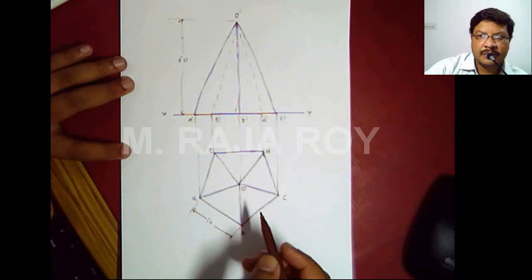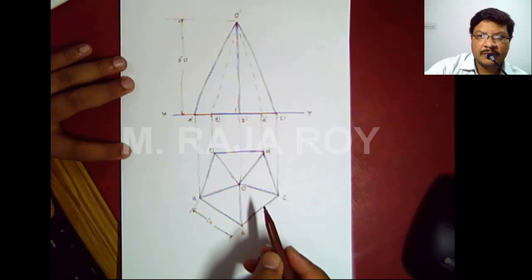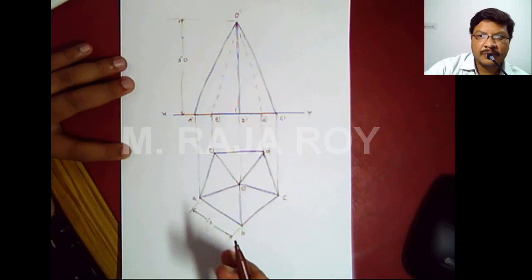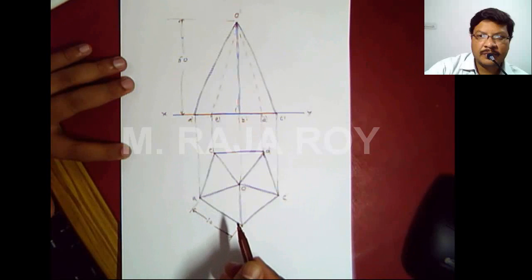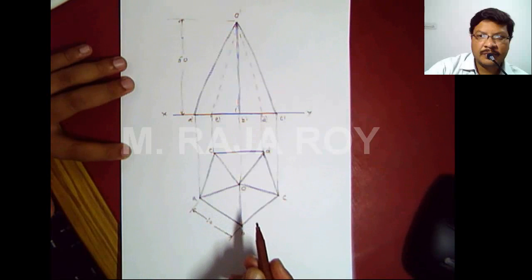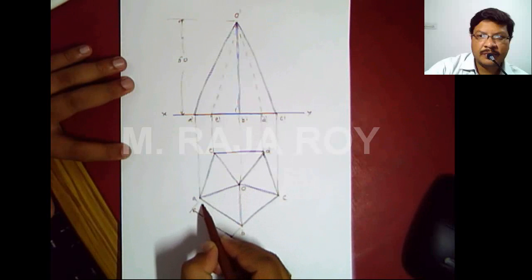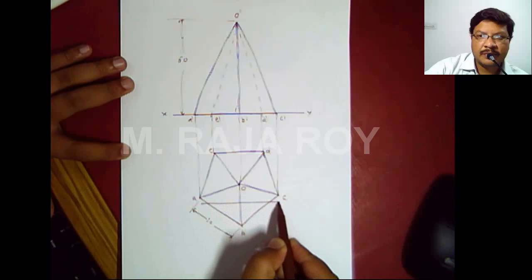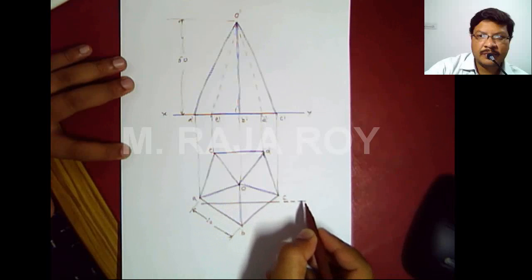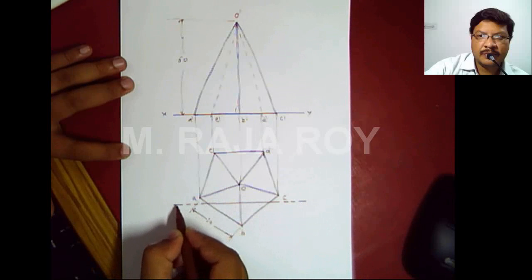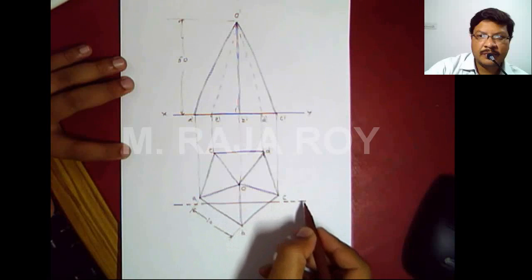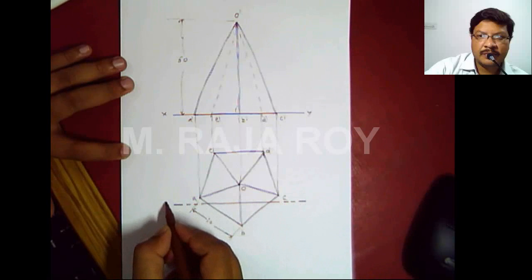Now I will represent the section plane. This is the second step: we have to represent the section plane with its trace. The section plane is parallel to VP and perpendicular to HP, so you have to represent it with its horizontal trace. This section plane is at a distance of 12mm from the apex. You have to denote the section plane at the ends with two short dashes and one thick long dash at the end. This is HT.